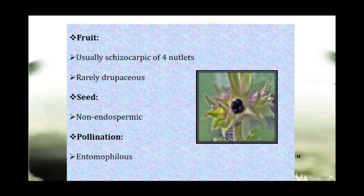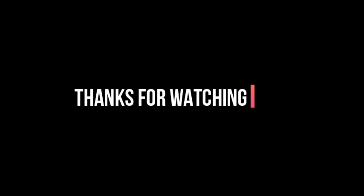Regarding the fruit: it is usually schizocarpic, breaking into nutlets. Seeds are non-endospermic. Pollination is by entomophilous means. The ovary is converted into fruit after pollination, mostly pollinated by entomophilous agents.